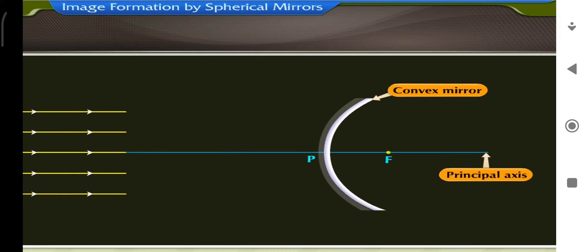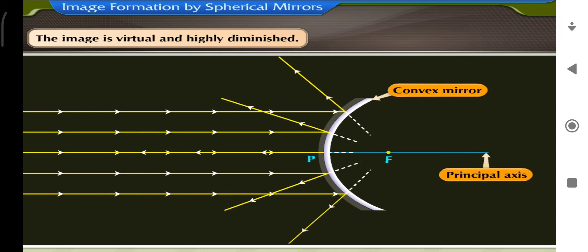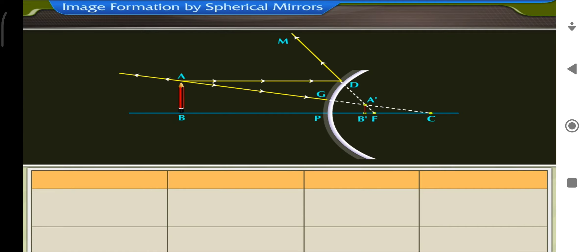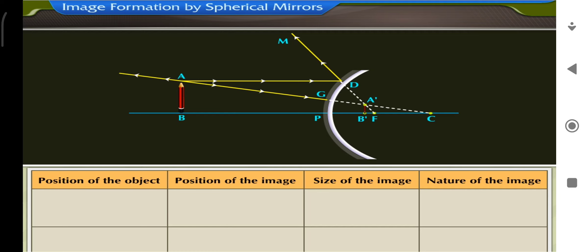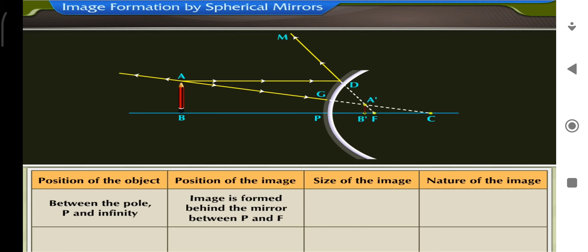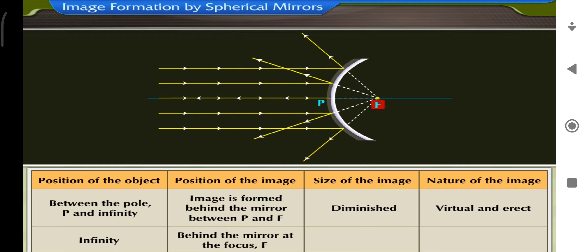If the object is at infinity, the rays coming from the object are parallel to the principal axis. The rays diverge on reflection and a virtual, highly diminished image is seen at the focus F. Hence, for all positions of an object in front of a convex mirror, the image formed is on the other side of the mirror between focus F and pole P. Summary table: when the object is anywhere between pole P and infinity, the image is behind the mirror between P and F, diminished, virtual and erect. When the object is at infinity, the image is behind the mirror at focus F, highly diminished, virtual and erect.